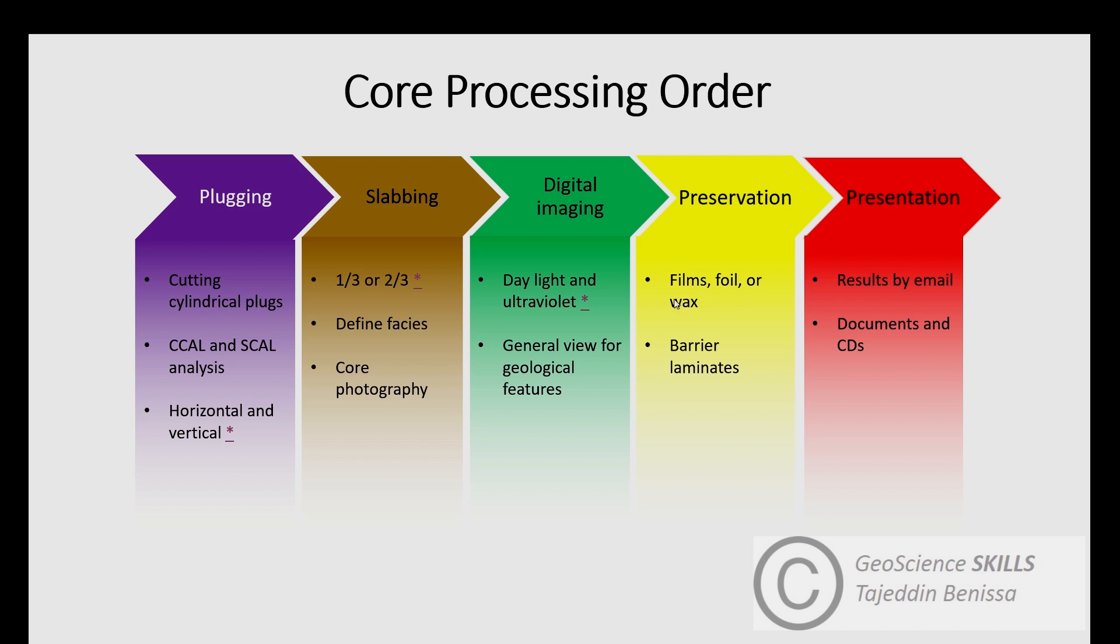Samples are placed in barrier laminate. Then presentation, where all the obtained data from all core processes—number of core samples and boxes, core spectral gamma log, core images, a list of numbers and depths of plugs—all must be sent as digital format and hard copies, including documents and CDs.